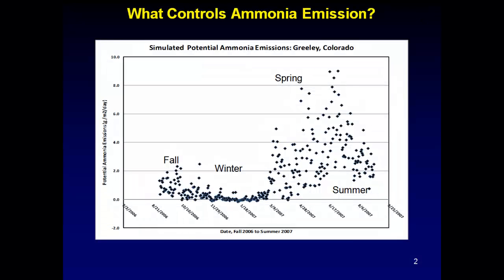The overarching goal of the project is basically this graph. We want to be able to predict what ammonia emissions could be, or most likely would be, given environmental conditions throughout the fall, winter, spring, and summer. You've heard a lot about Rocky Mountain National Park and the quote-unquote deposition season in the spring and summer in Colorado. You can see here that as temperature increases, emissions increase, and we have other aspects that will affect us. The overall goal is predicting what kind of emissions we would expect to see from certain feedlots.